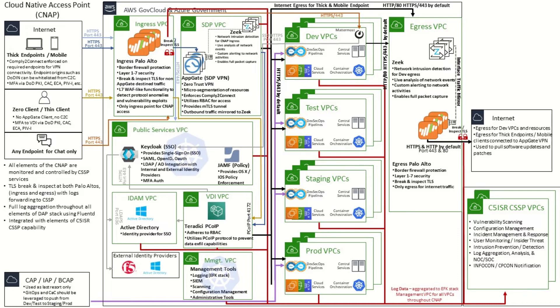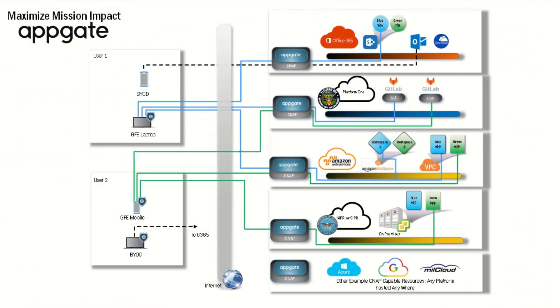A management VPC contains all management tools — the SIEM, the SOAR, scanning, and centralized logging and telemetry. After passing through the AppGate zero trust Software Defined Perimeter, you can access different resources across different VPCs and clouds. It's cloud agnostic — the same stack runs on Amazon, Azure, and other cloud providers, all the way to on-premise and edge environments, with AppGate controller and gateway replicated across all environments. An egress VPC also has Palo Alto for border firewall protection with Layer 1 to 7 break-and-inspect, and Zeek is used on both ingress and egress VPCs for intrusion detection with full packet capture.